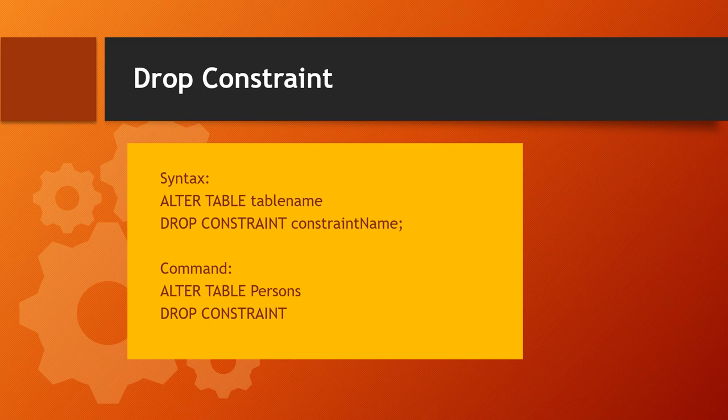For dropping a constraint, here is the syntax: ALTER TABLE table_name DROP CONSTRAINT constraint_name. For example: ALTER TABLE person DROP CONSTRAINT whatever_constraint_name. We have discussed all about constraints in our previous video — I'll put the link in the description box.